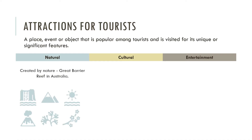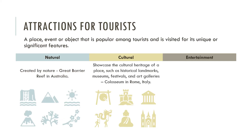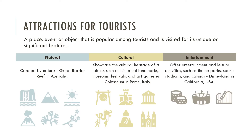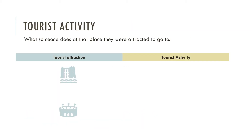Natural attractions are those created by nature — for example, the Great Barrier Reef in Australia. Cultural attractions showcase the heritage of a place, such as landmarks, festivals, and art galleries — the Colosseum in Rome, for example. Entertainment attractions include theme parks like Disneyland and sports stadiums. The tourist activity is what someone can do once they are there, such as hiking, going on a river ride, watching a sports match, or seeing a concert.